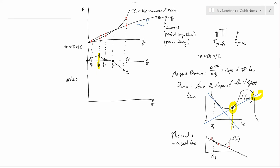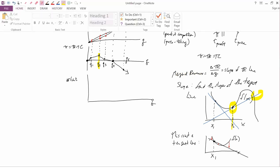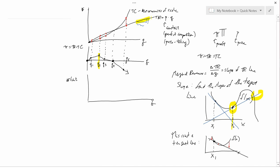Marginal revenue is the slope of the total revenue line. Since total revenue is a straight line, its slope is constant, so marginal revenue is constant everywhere. You can draw tangent lines at Q1, Q2, Q3, Q4, Q5 — all of them look like the line itself because that's the only way to draw a tangent to a straight line. All those tangent lines have the same slope.